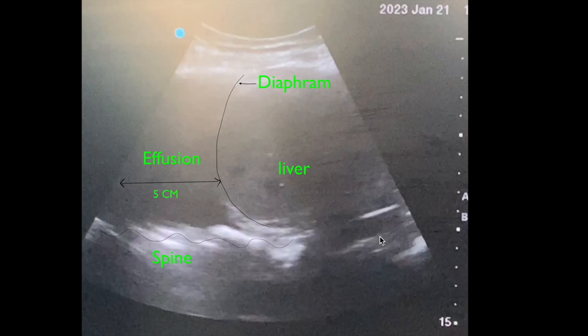How can you do a quantitative assessment of pleural effusion? Pleural effusion is a fluid collection between the parietal and visceral pleura. To quantify it, we calculate the distance between the two pleura. If this distance is one centimeter, the fluid volume is around 100 to 200 ml. If it is five centimeters, the fluid volume is considered to be around 500 to 1000 ml.